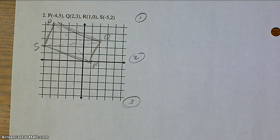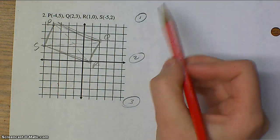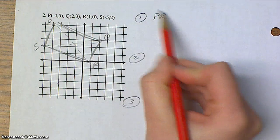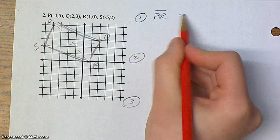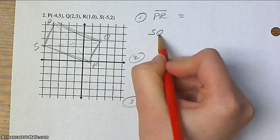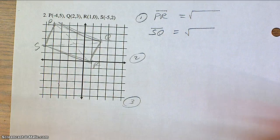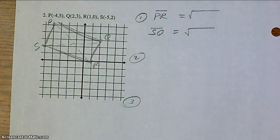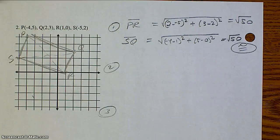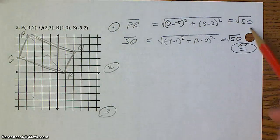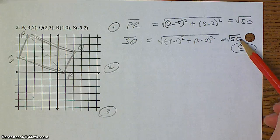On to question number 2. Go ahead and graph your points. When you're all caught up, then come join me. Go ahead and calculate the distances of both of those. When you're ready, resume the video. When you calculate out your distance formulas, you should find that both of these come out to be the square root of 50.